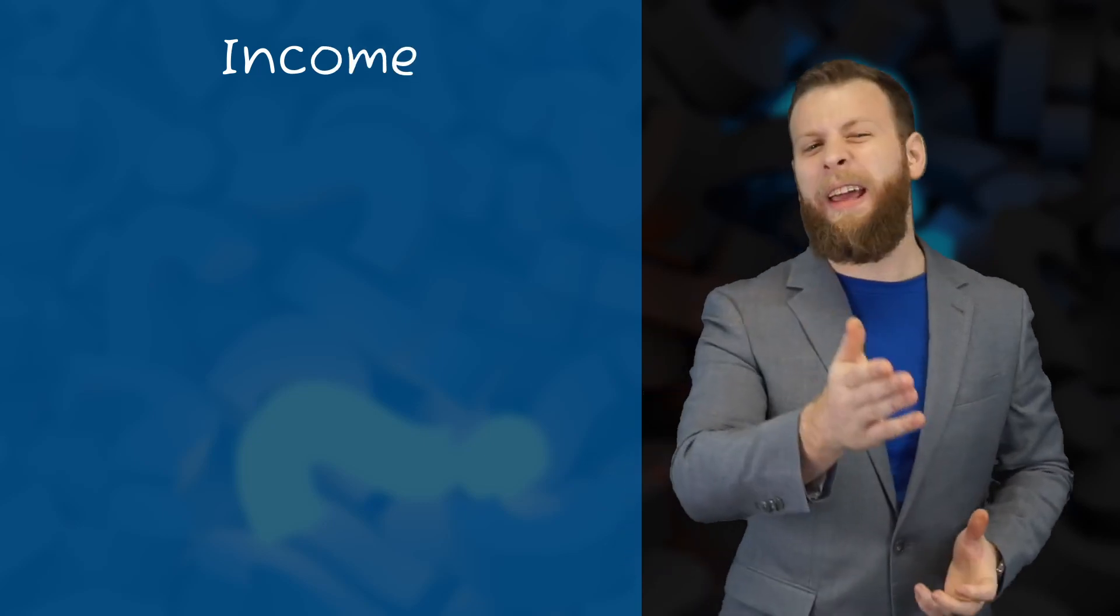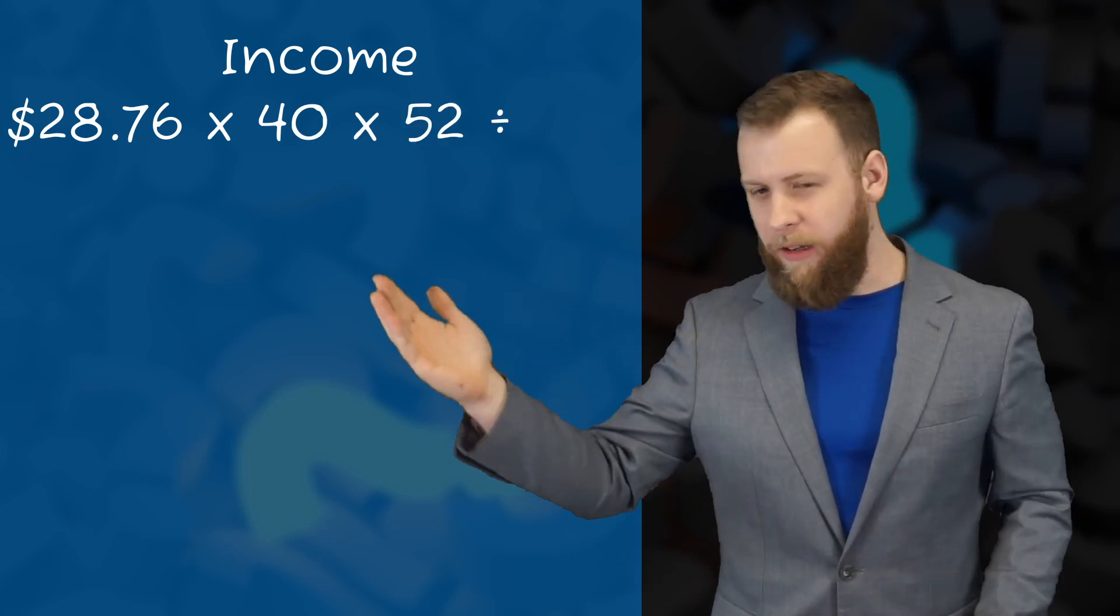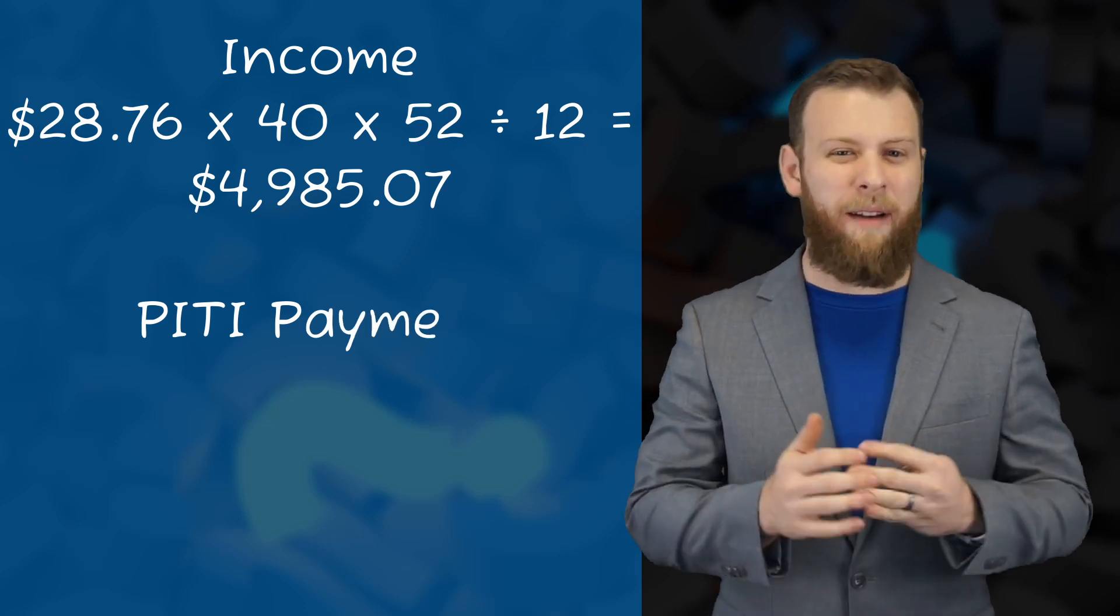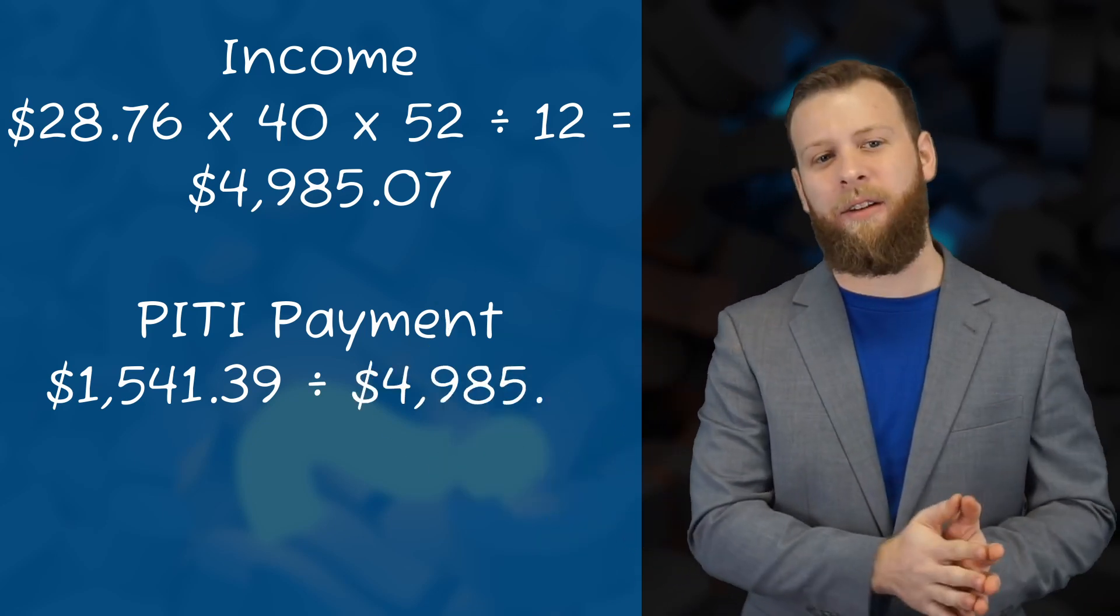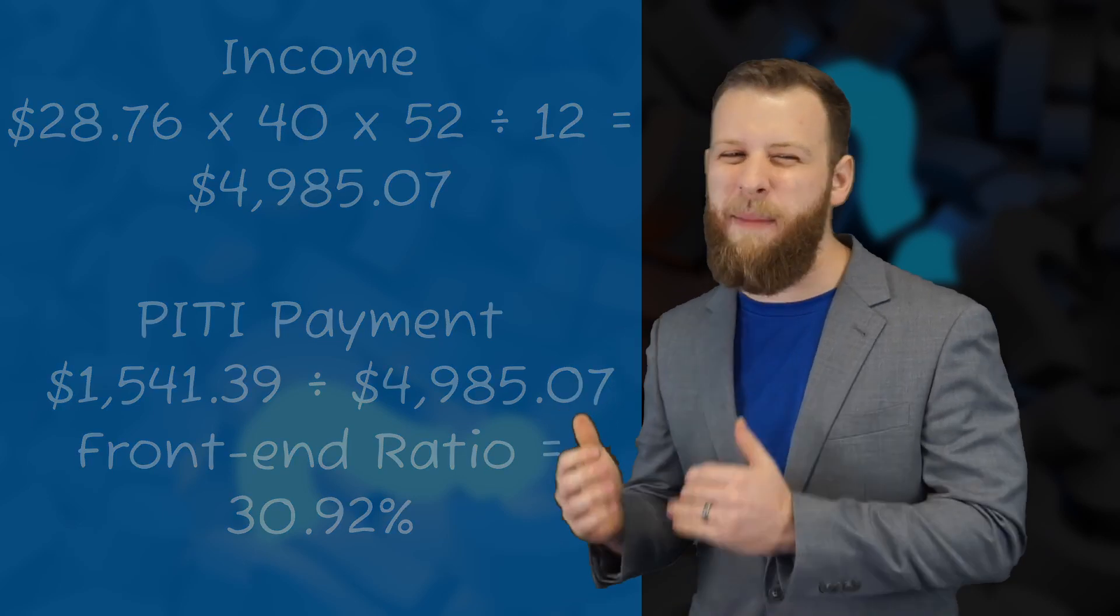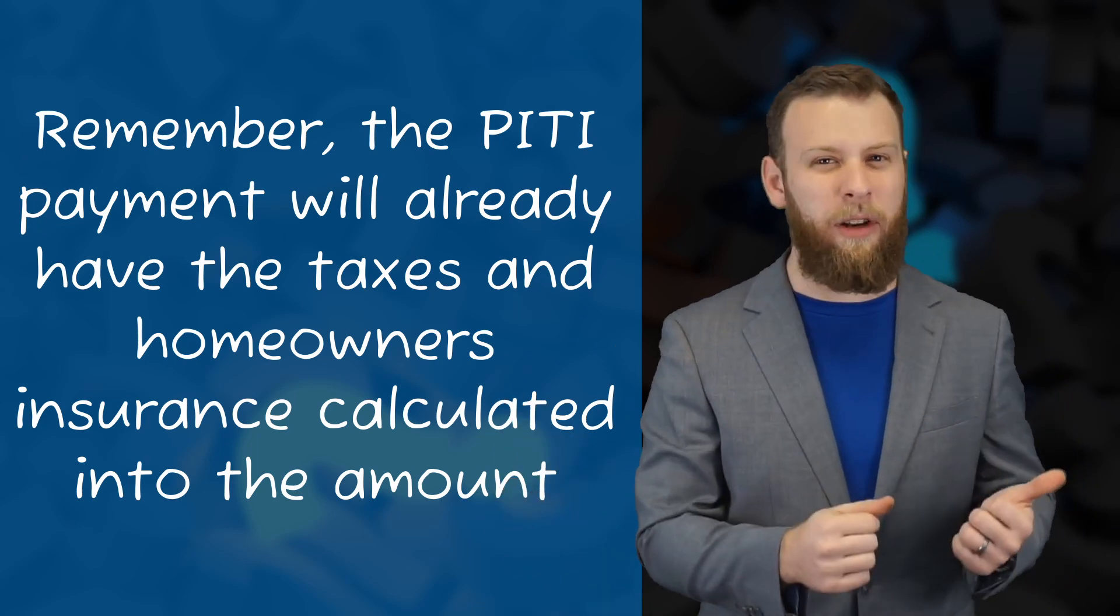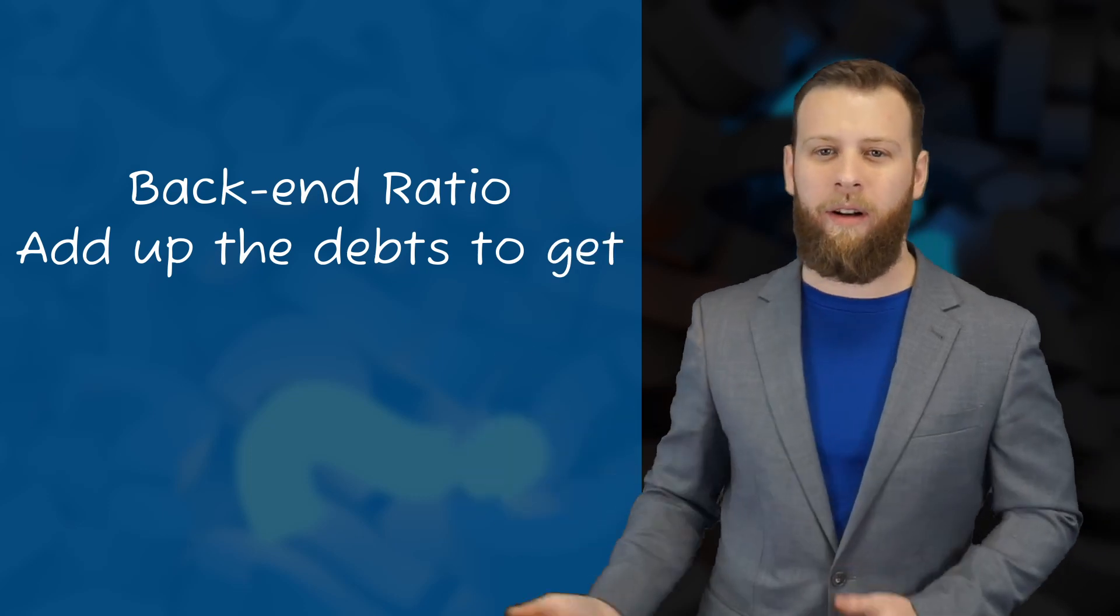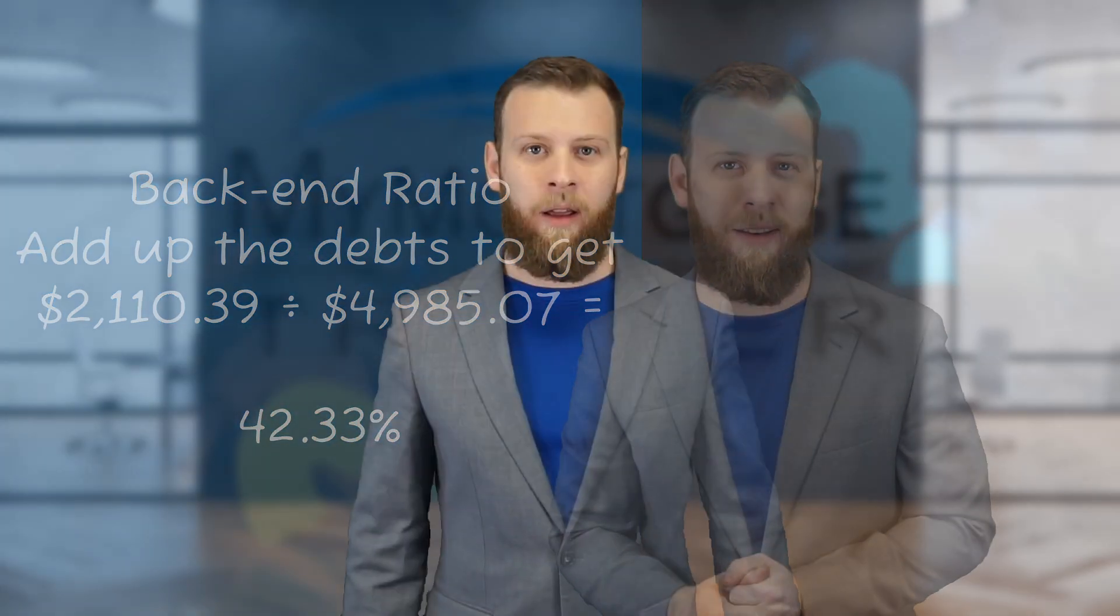Alright, so let's work that one out. The income is going to calculate at $28.76 an hour times 40 hours per week times 52 weeks a year. Divide that by 12 and we're going to get the gross monthly income of $4,985.07. The PITI payment of $1,541.39 is given in this question. When we divide that by his income of $4,985.07, we're going to get a front end ratio of 30.92%. Now this is a great example of the ways they may try to trick you in the test. The PITI payment they gave will already include those taxes and homeowner's insurance, but they're given in the question just to throw you off. For the back end ratio, we'll add up all the borrower's debts to get a total of $2,110.39. When we divide this by his income, we're going to get a back end ratio of 42.33%. So how did you do on this?